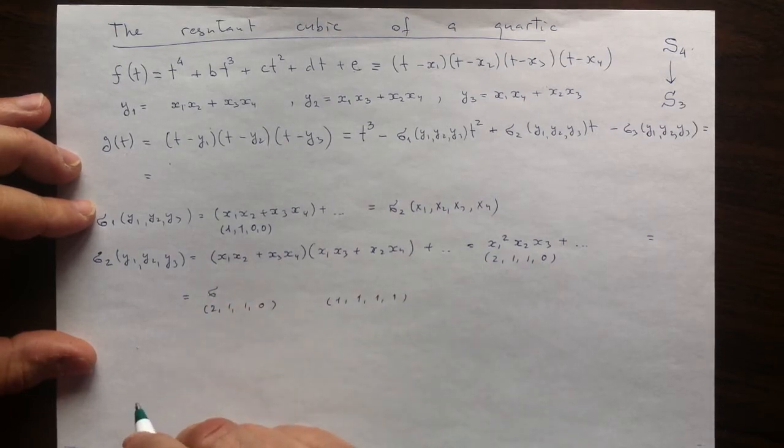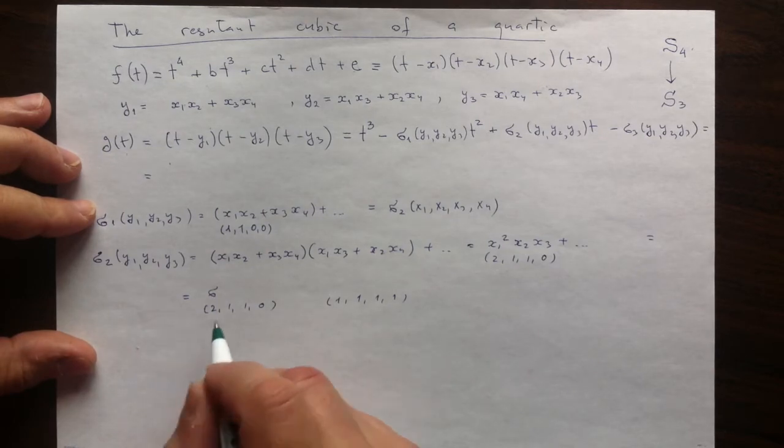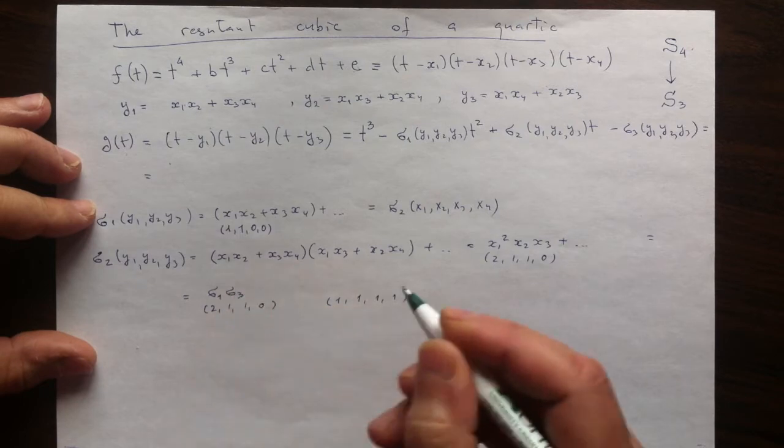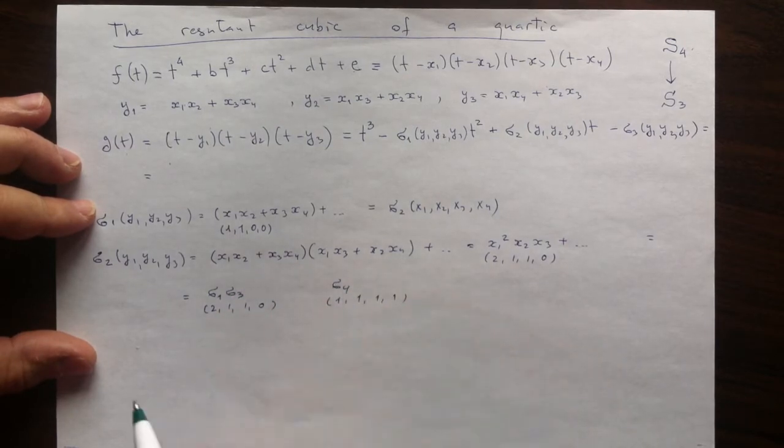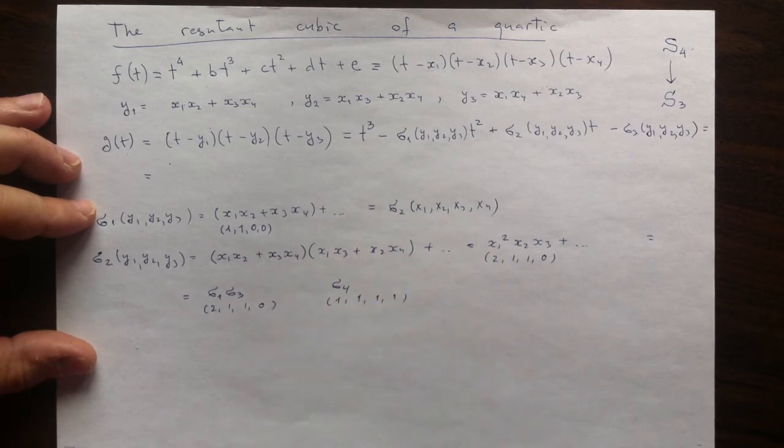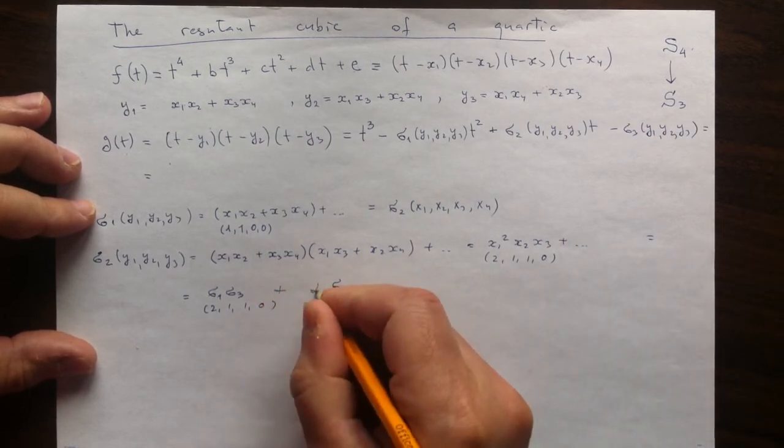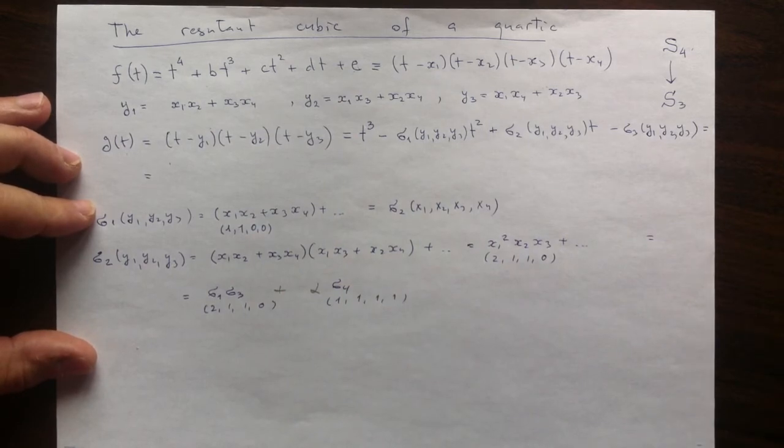The elementary symmetric combination with the highest vector is σ1 times σ3. And here we'll just have σ4. So we'll have one unknown. I will use a pencil, call it α.